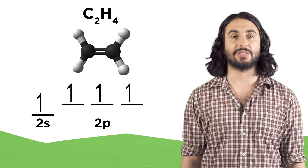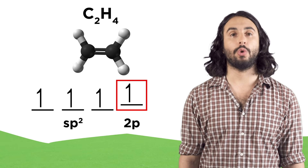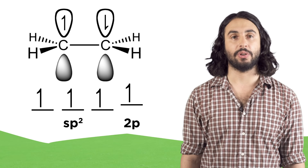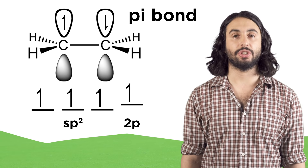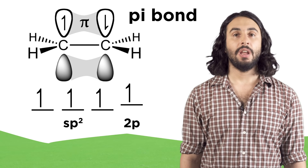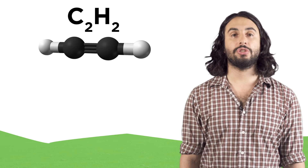That leaves one p orbital unhybridized. It is the overlap of these unhybridized p orbitals, each containing one electron, that generates a pi bond, which is what the second bond in this double bond is. The p orbitals extend in perpendicular fashion from the plane of the molecule and they overlap to make the pi bond.